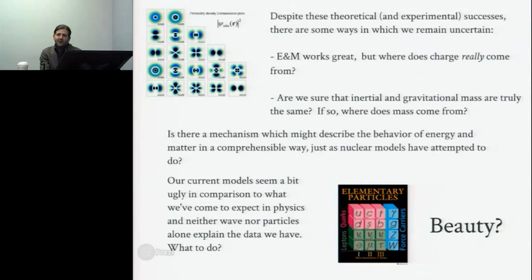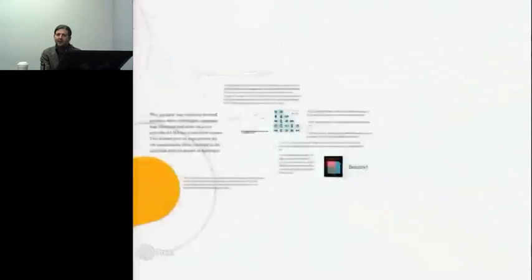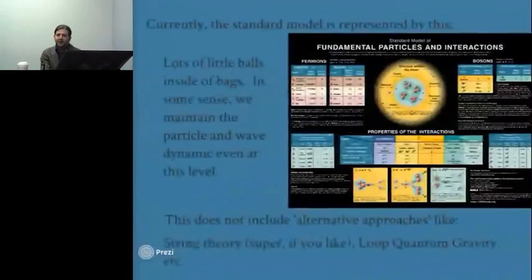So there are some things which are kind of strange. E and M, electromagnetic theory, works great. But where does charge really come from? It posits charge from the beginning as a thing and says, here's positive charge, here's negative charge, or sources and sinks, etc. But it doesn't really explain a mechanism for how those are created in the first place. And then we talk about mass as well. There are questions, is inertial and gravitational mass the same thing? Or are we having two different kinds of mass?